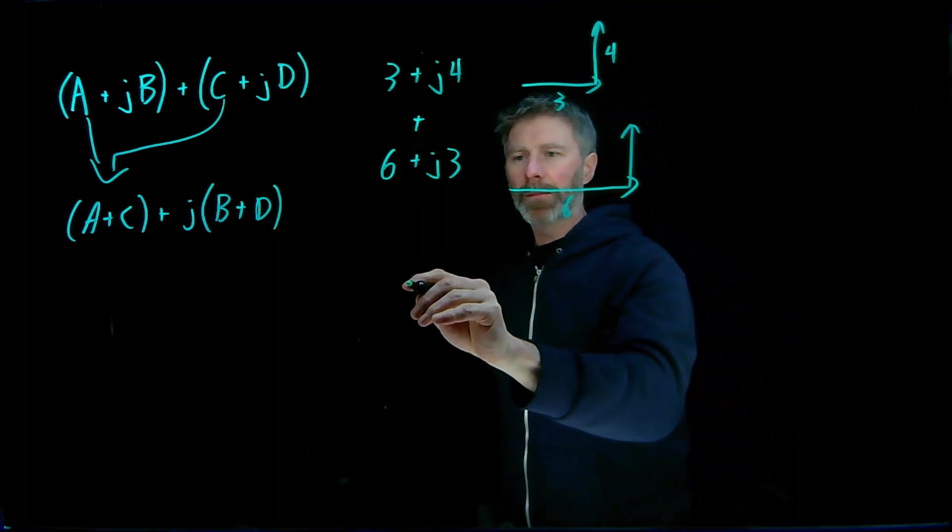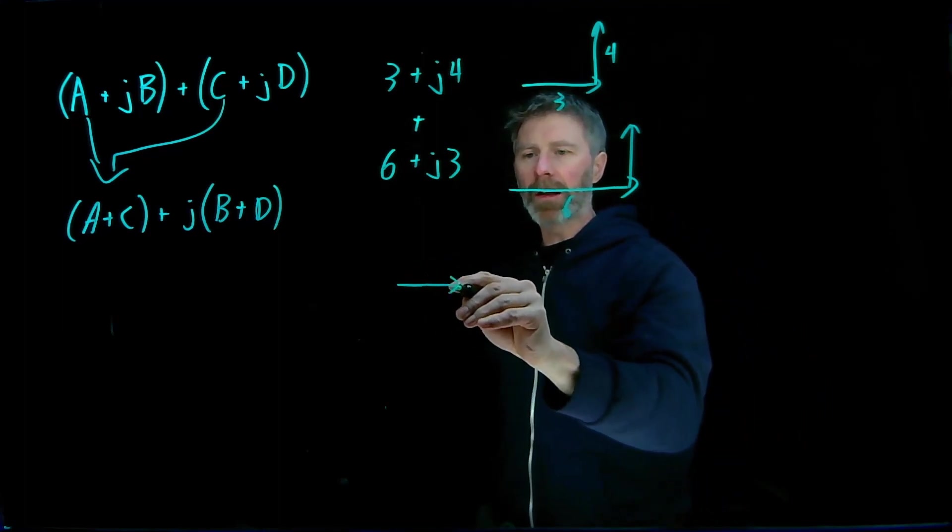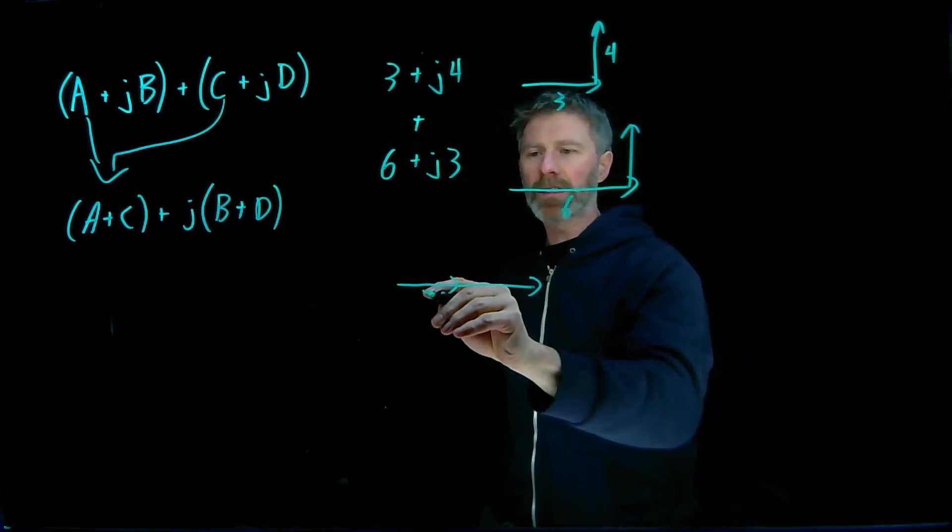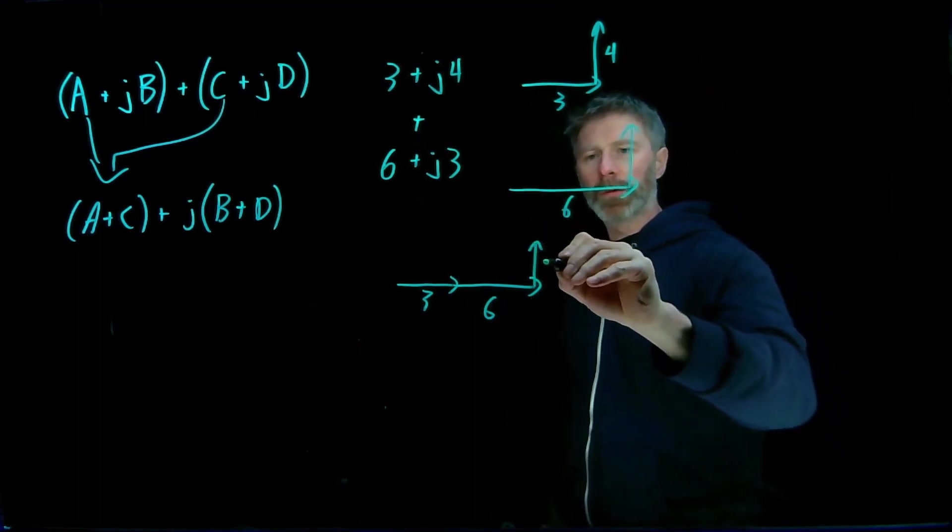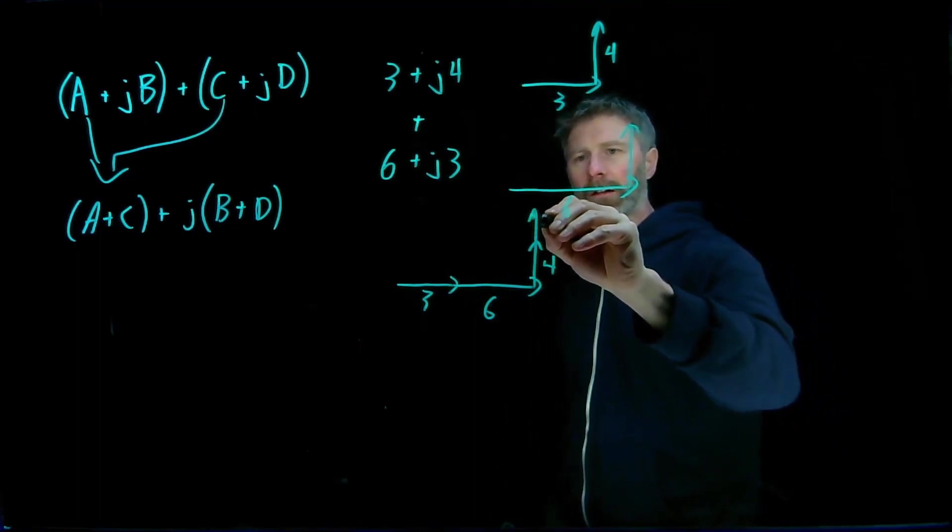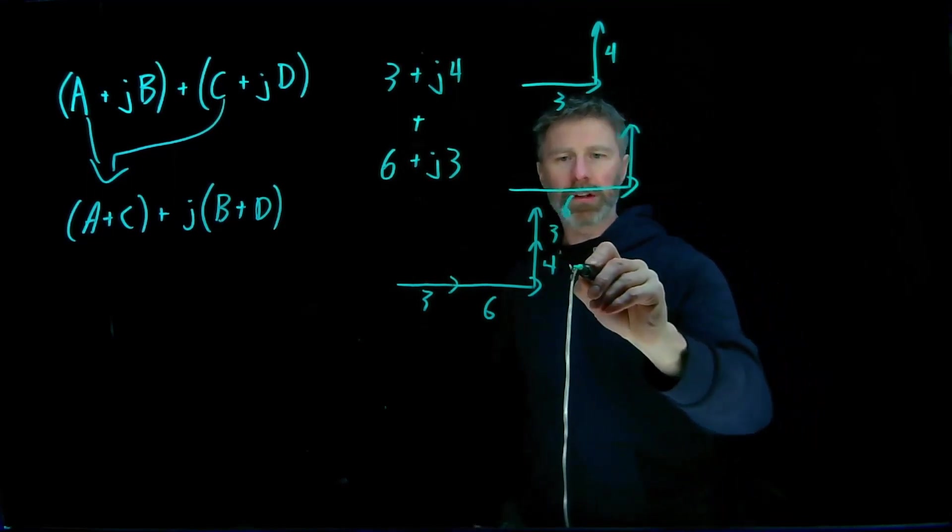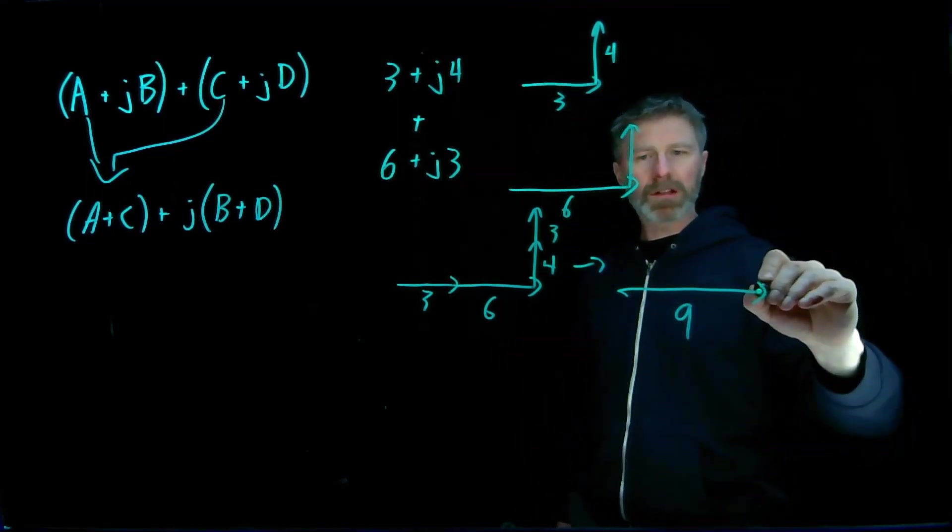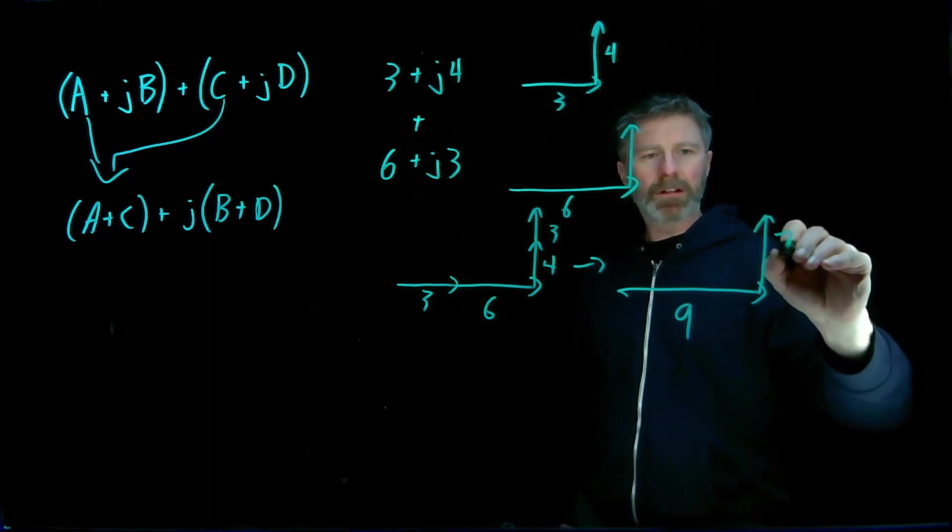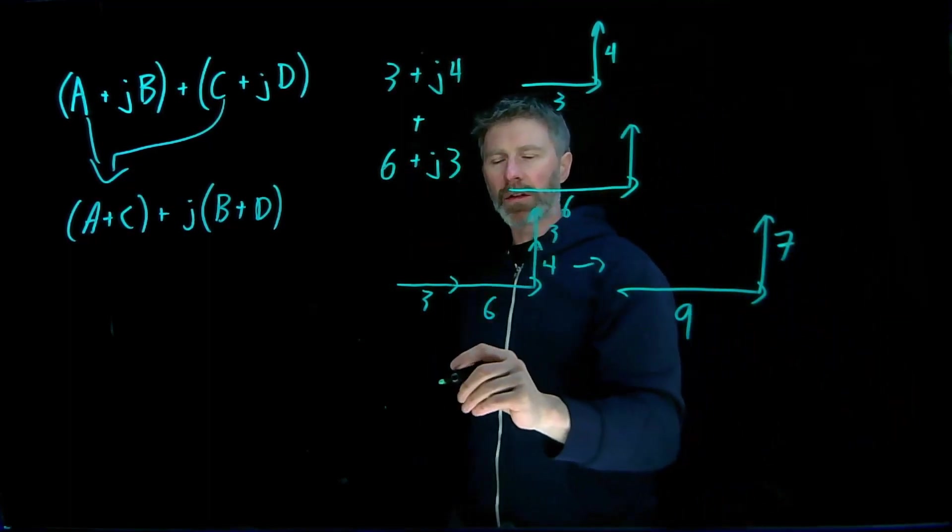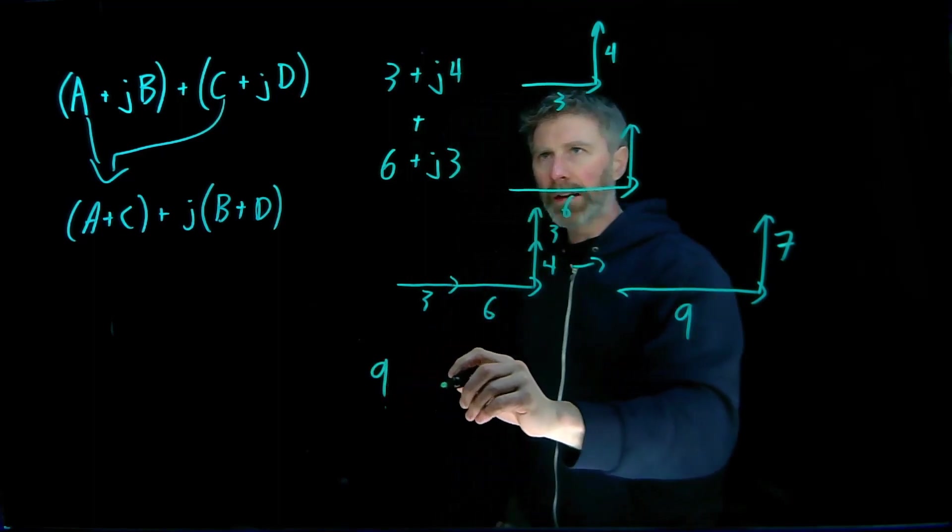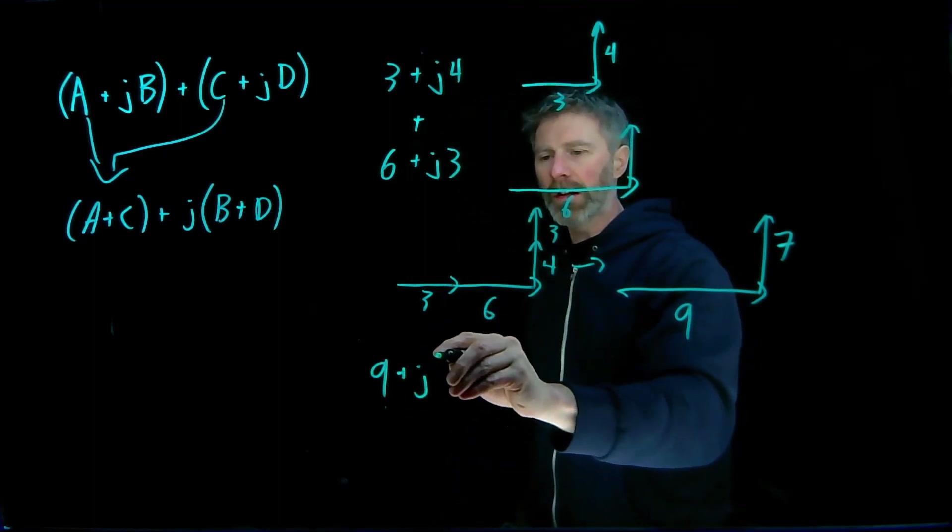So what I end up with is the real parts adding together, 3 plus 6, and then the imaginary parts adding together. We have 4 and 3, which results in 9 in the real axis and 7 in the imaginary axis. So 3 plus j4 plus 6 plus j3 is equal to 9 plus j7.